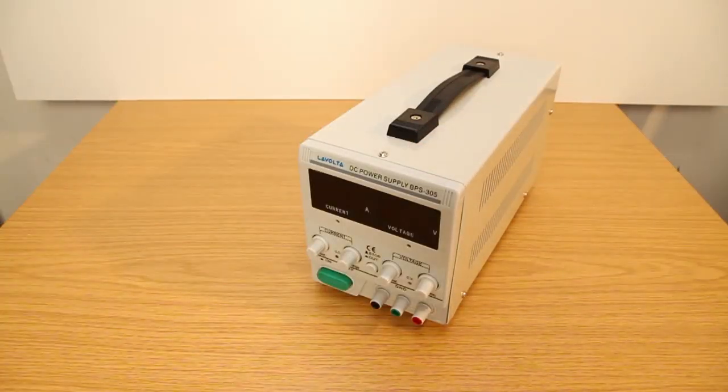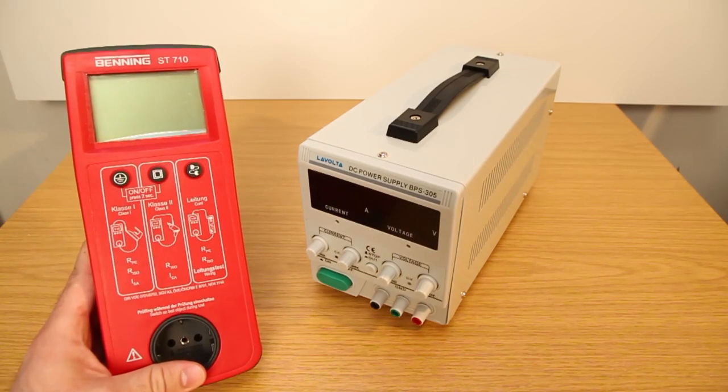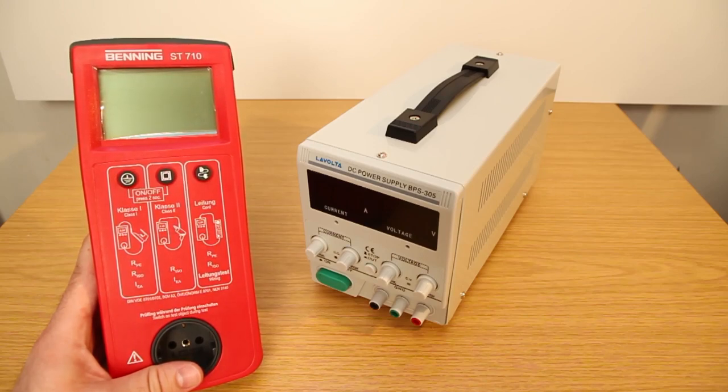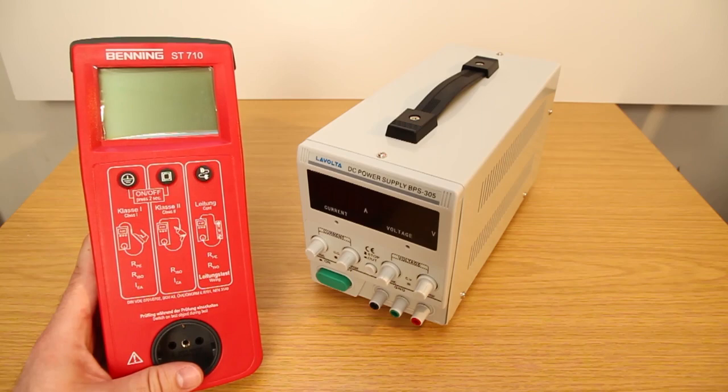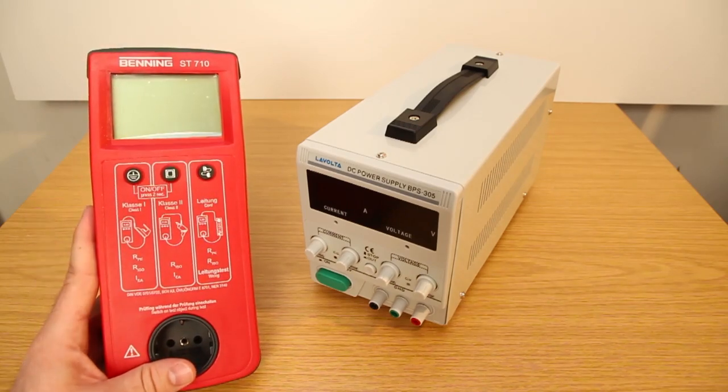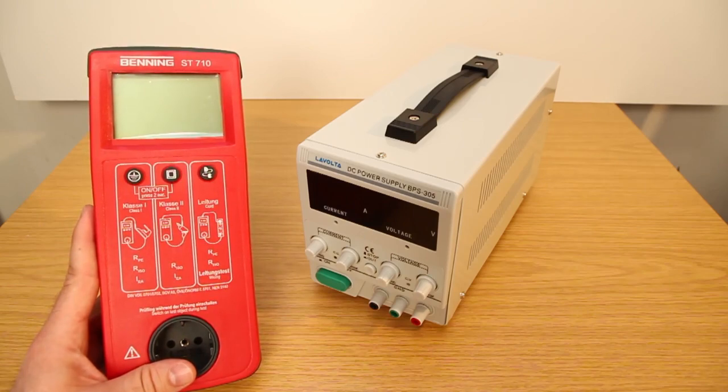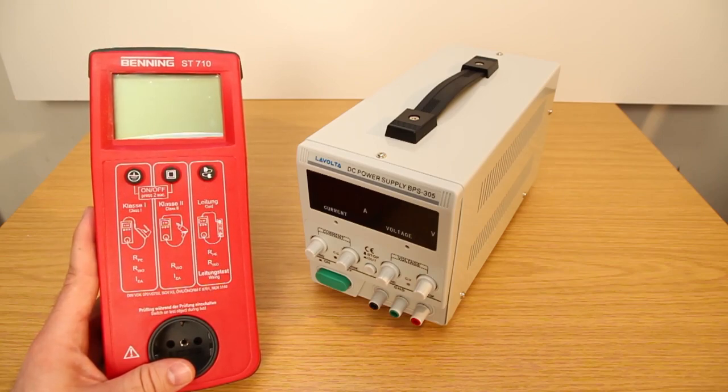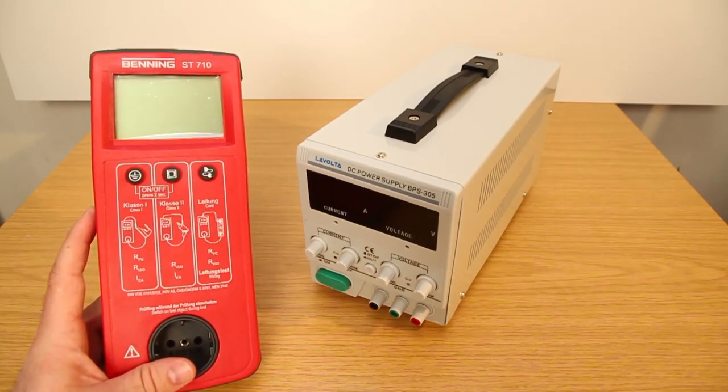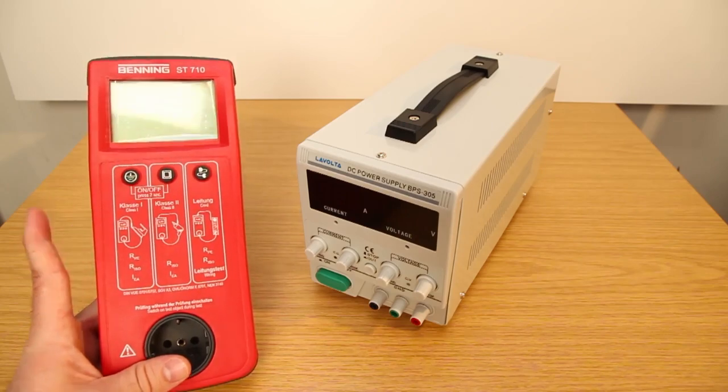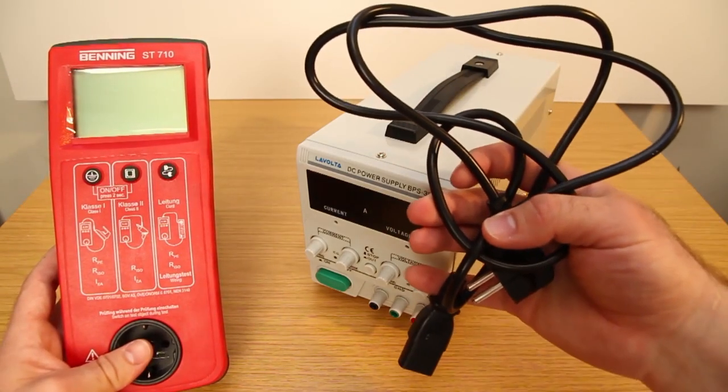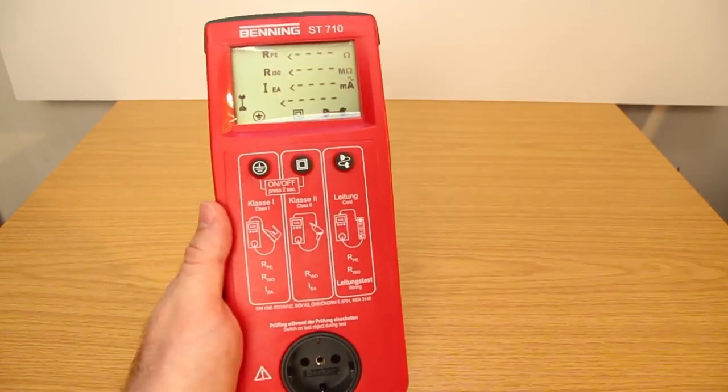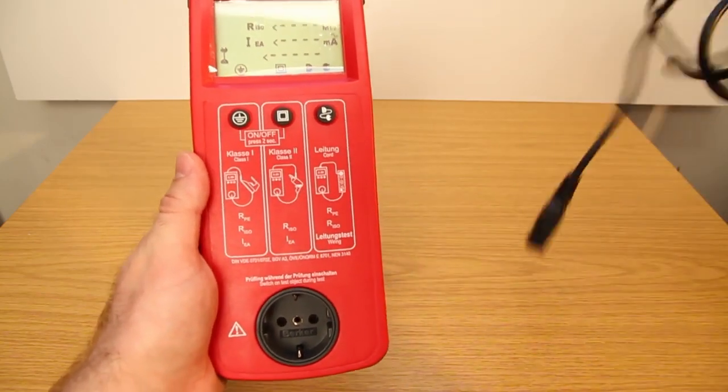Let's check if the device is safe to use. For that I got this Benning ST 710 device tester. It covers the DIN 0701 or 0702. It is not calibrated but as you can see it is like new and so far I have no reason to mistrust it. Usually it's the other way around - in a professional environment you need good reasons to trust your gear like a good manufacturer, good documentation, certification or calibration documents, maintenance and records and so on. But I don't have that kind of money lying around so this will have to do.